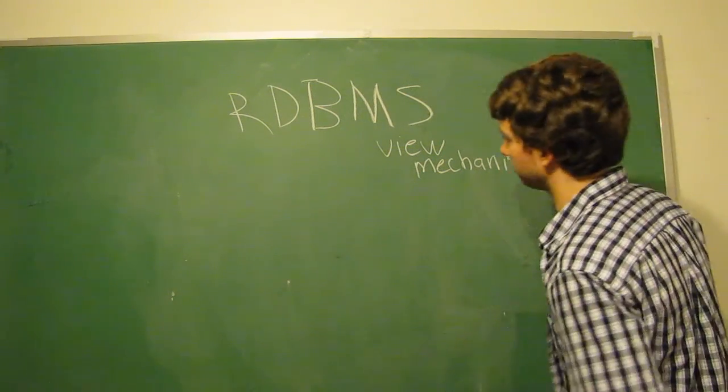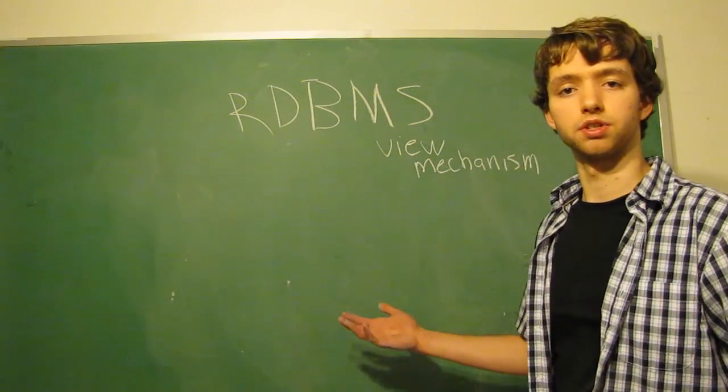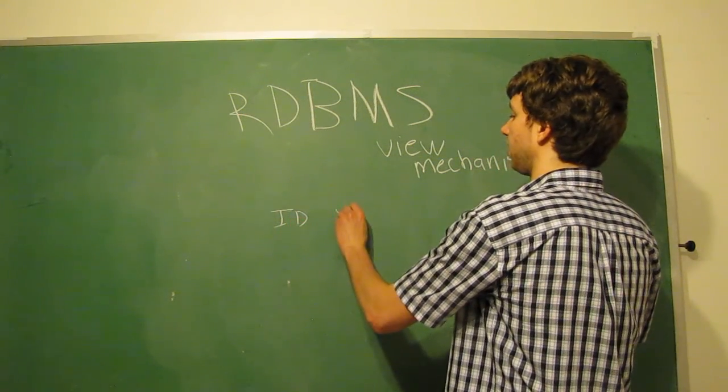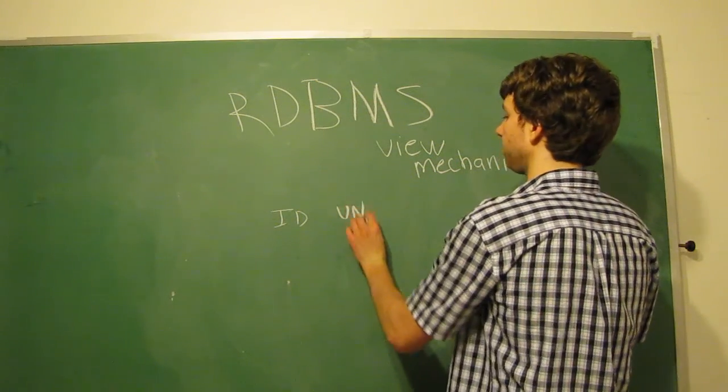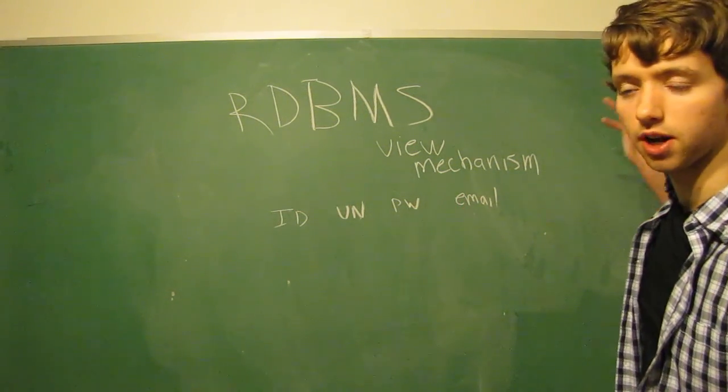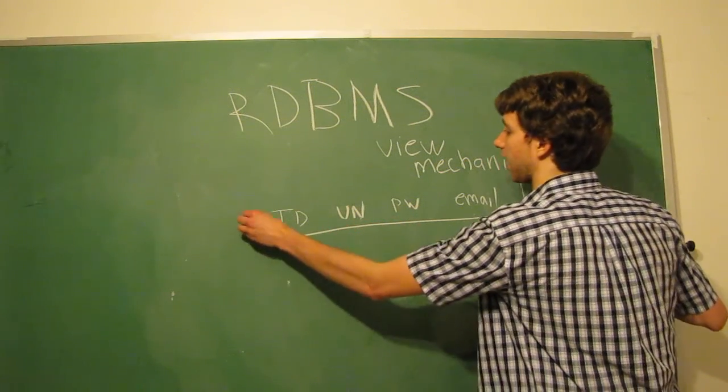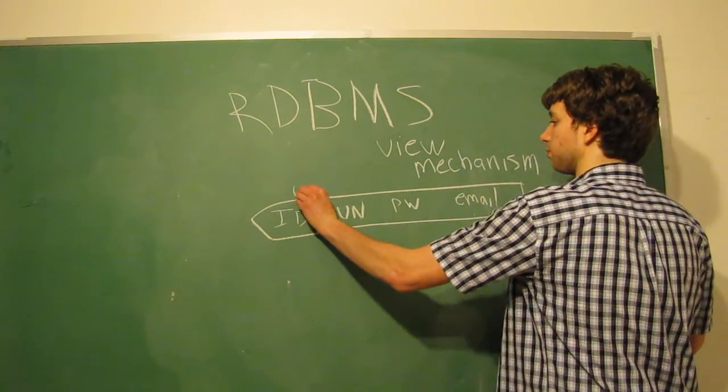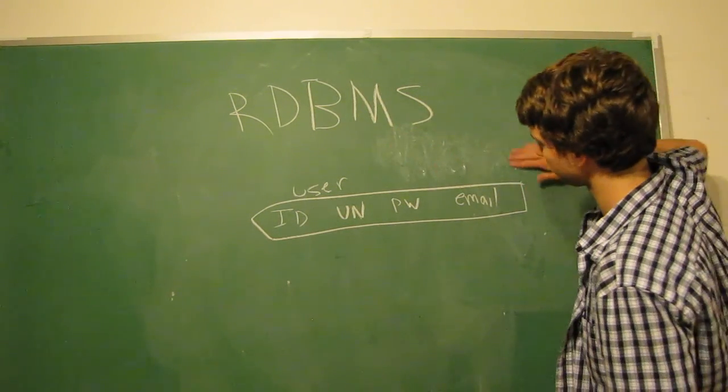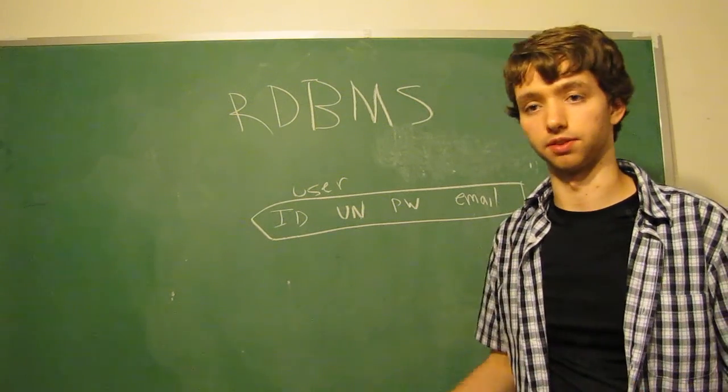So basically, a view mechanism allows us to change the surface appearance of our data. So when we store our values in our database, we might have it to where we're going to store an ID, we're going to store a username, I'm just going to shorten these up to make it easy. We're going to store a username, we're going to store a password, we're going to store an email, and then we're going to store street address, state, city, and so forth. But let's just say this is how it is for now. Here is the actual table structure for the user table. So here are all of our attributes for a user.